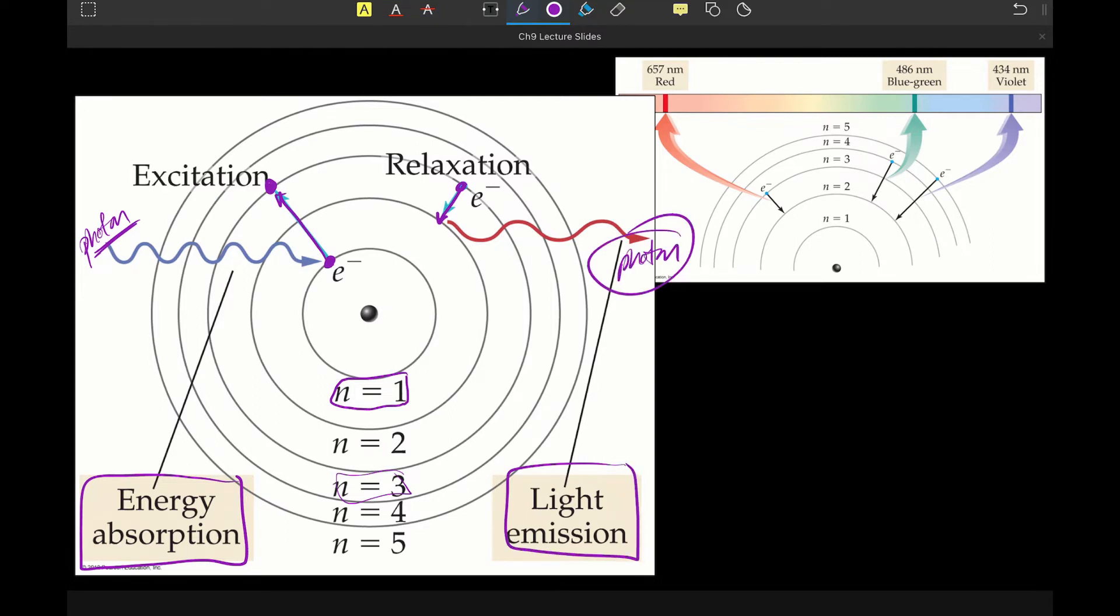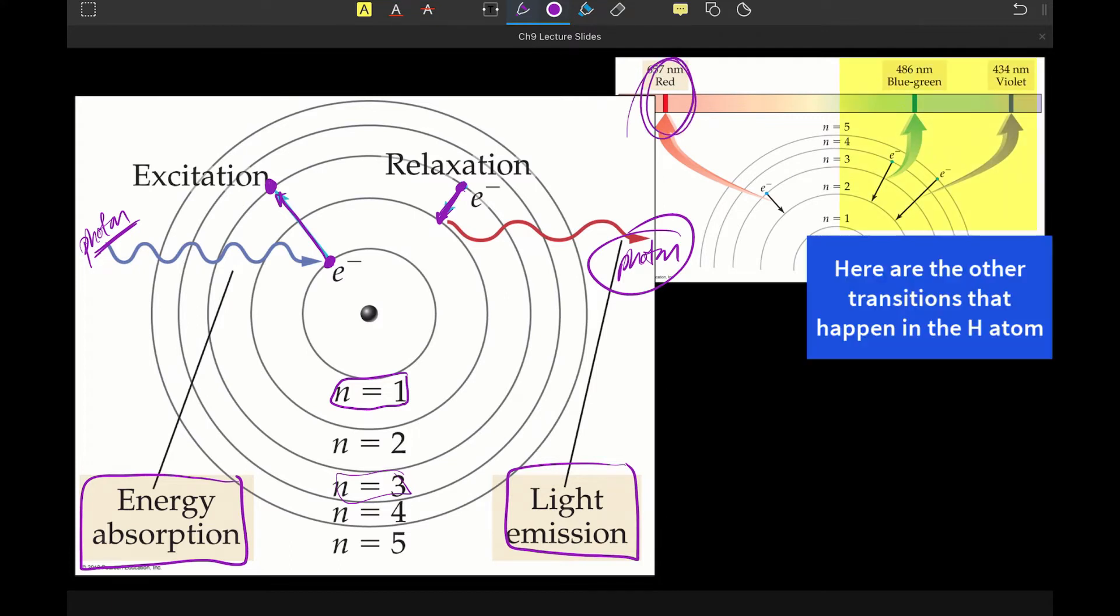And so then what that photon tells us is that if we can check out the wavelength, the frequency, energy—all those things go together. If we can monitor that photon, then that photon will tell us about the energy transition that that electron just underwent. That photon relays information about the energy change that that electron just underwent. And that gives us one of the colors of our spectrum, the light emission spectrum.